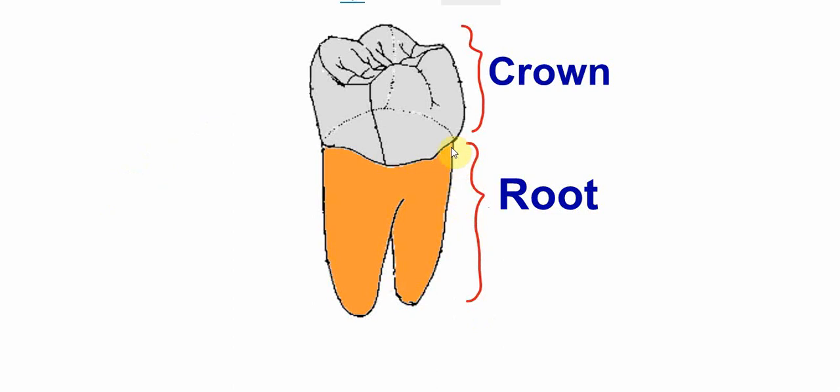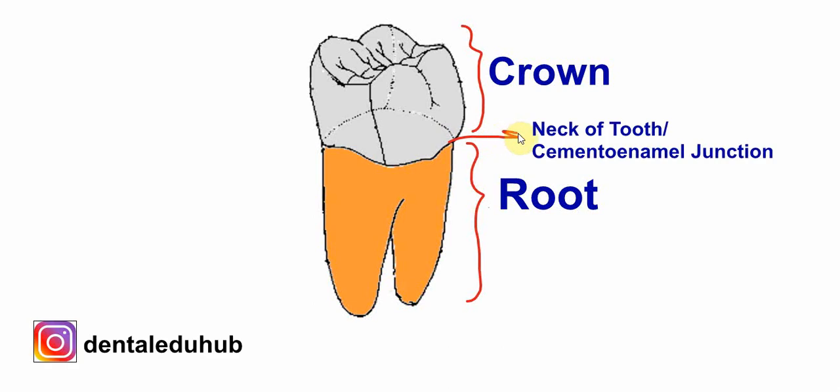The crown and the root are united with each other. The point of union of the crown and the root is known as the neck of the tooth, also known as the cementoenamel junction.